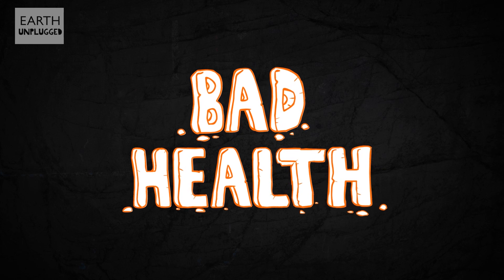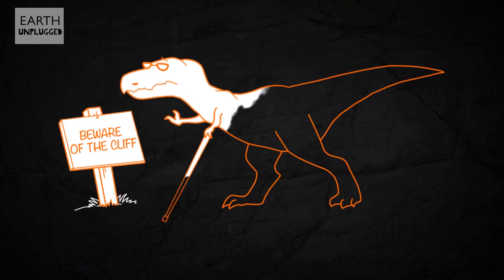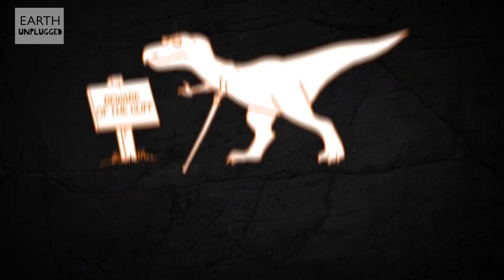Some say that dinosaurs became physical wrecks. Global warming and an increase in ultraviolet light may have caused blindness due to cataracts, leaving them vulnerable to falling off cliffs.